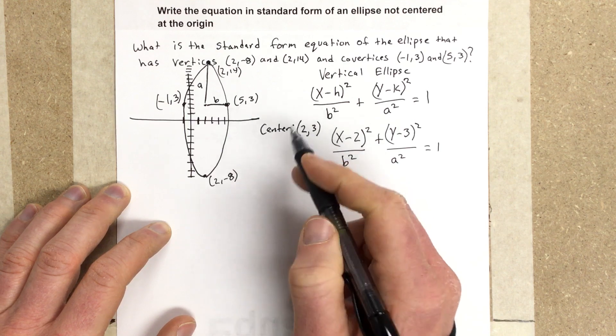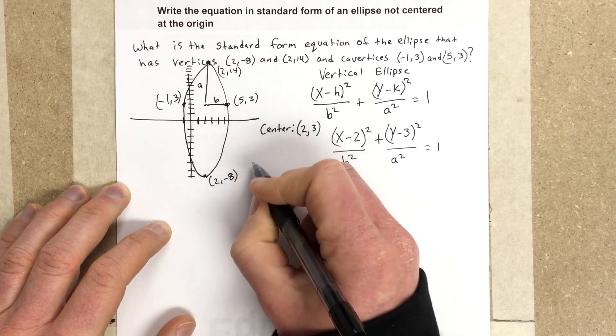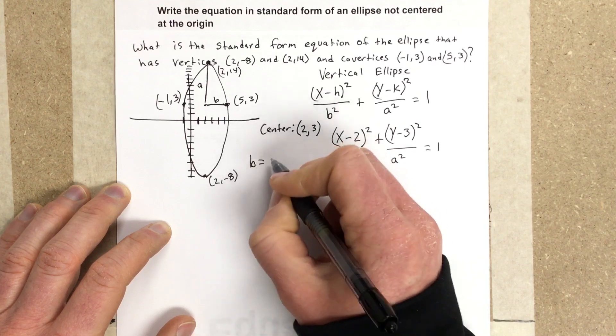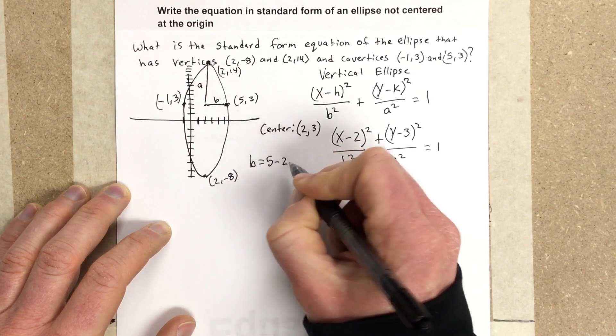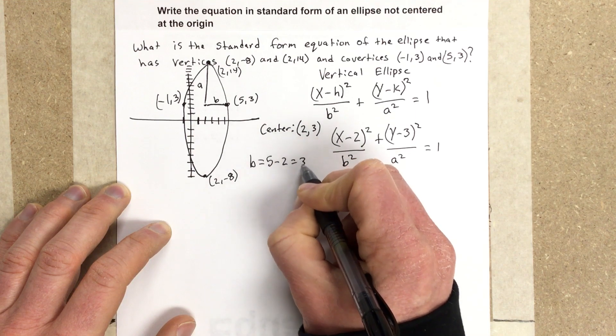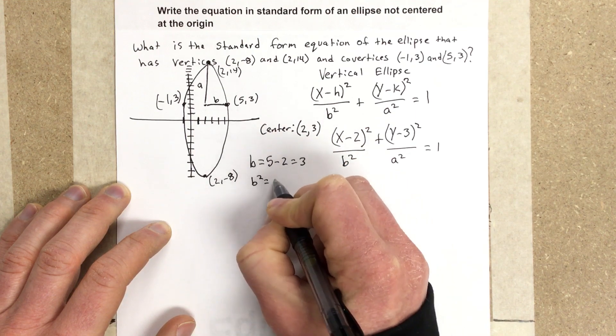So I can say that b would equal 5 minus 2, which is 3. So b² is equal to 9.